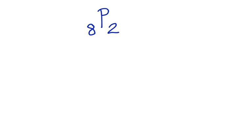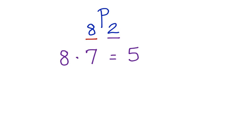There is a specific order to this. So if we have eight friends going two at a time, we take eight and multiply that by seven, which gives us an answer of 56. There are 56 combinations.